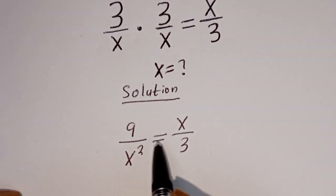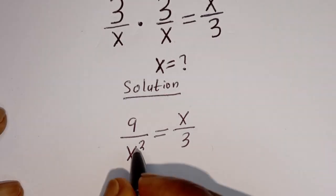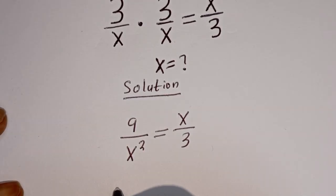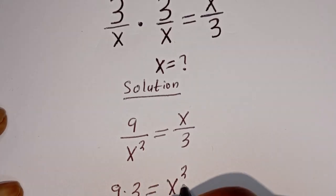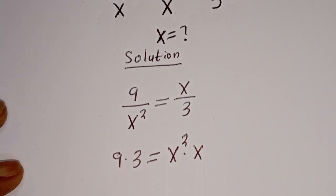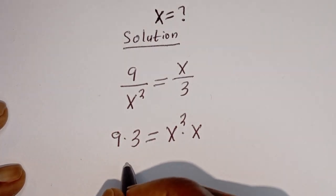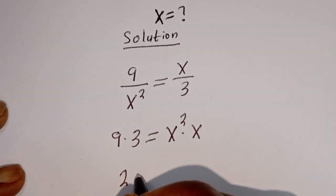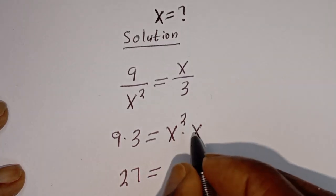From here we can cross multiply. 9 multiplied by 3 is equal to s squared multiplied by x. Then this is 9 times 3, which is 27, is equal to s squared multiplied by s.